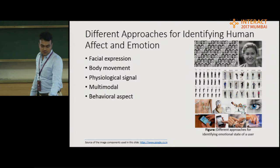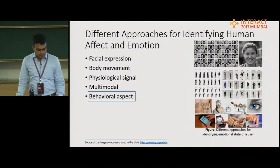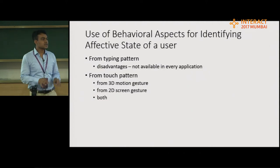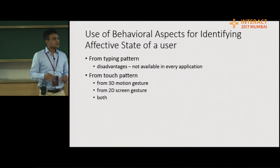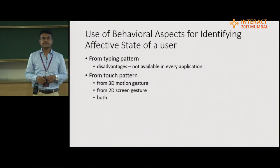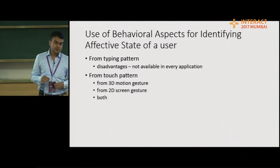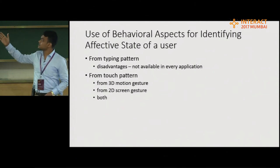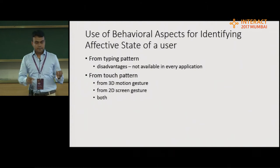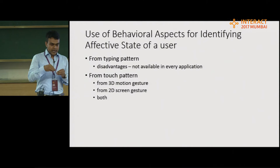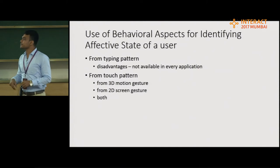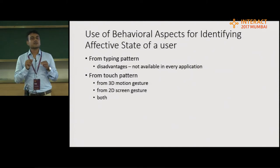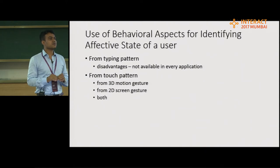So we have chosen the behavioral aspect — behavioral aspects like the user's touch pattern and user typing pattern. If we can identify the emotional state of the user using touch pattern or typing pattern, that will be acceptable for mobile interaction design. But a major limitation of typing pattern is that you cannot assume that all interaction content involves typing, so it is better to identify emotional state through touch.